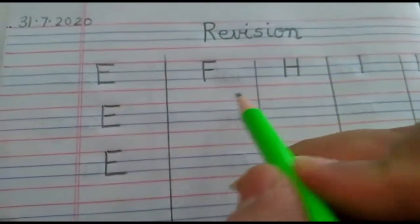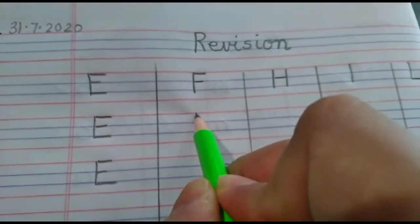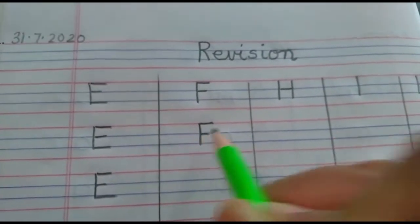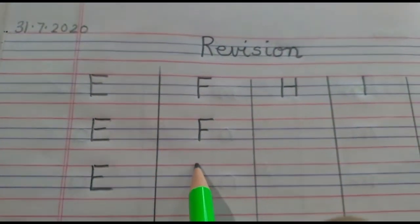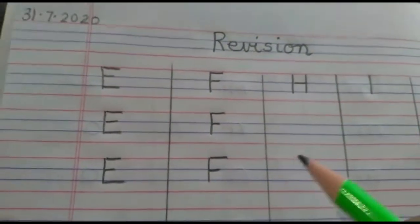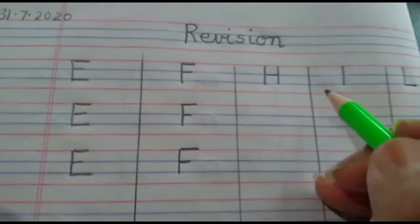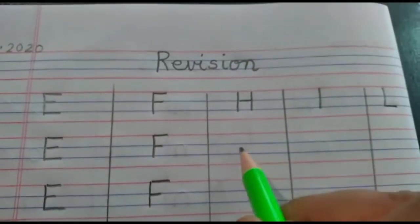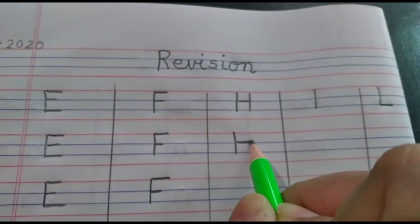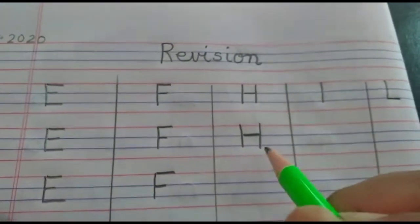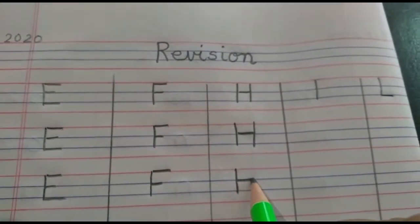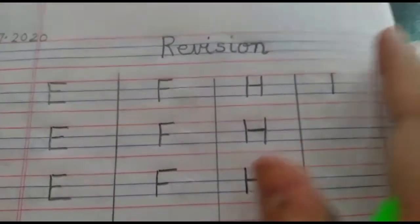Then we write F: standing line, one sleeping line, and second sleeping line — F. Again: standing line, one sleeping line, and second sleeping line — F. Now let's write letter H: one standing line, one sleeping line, another standing line — H. Again: standing line, sleeping line, another standing line — H.